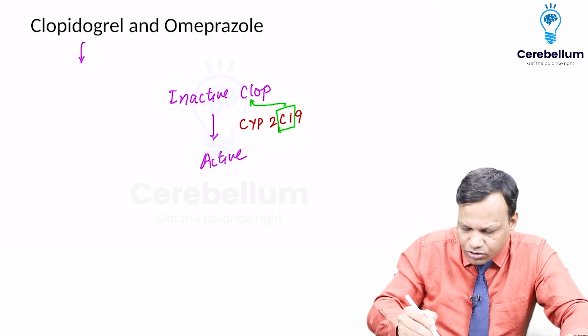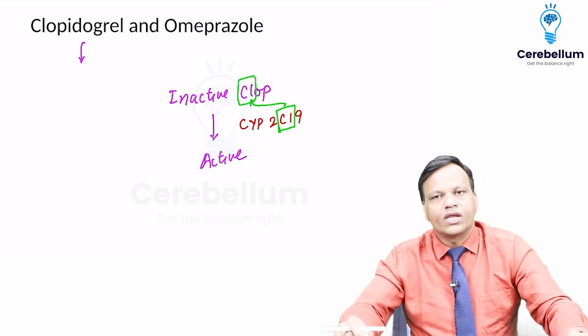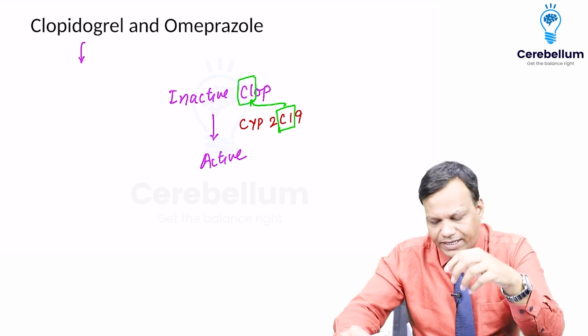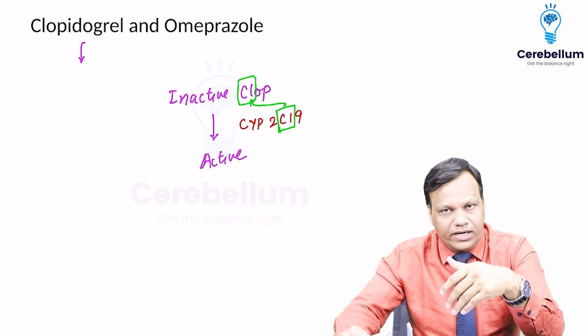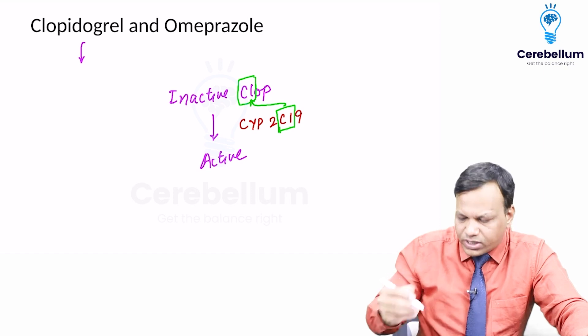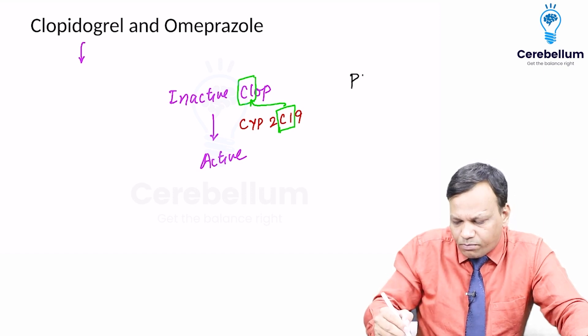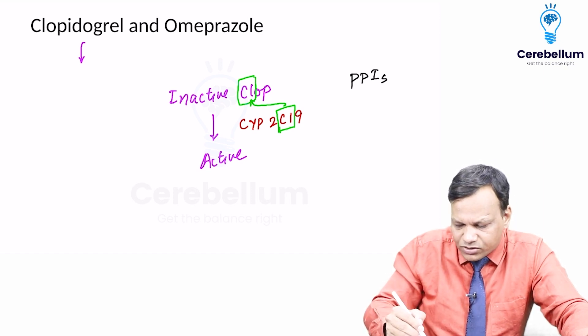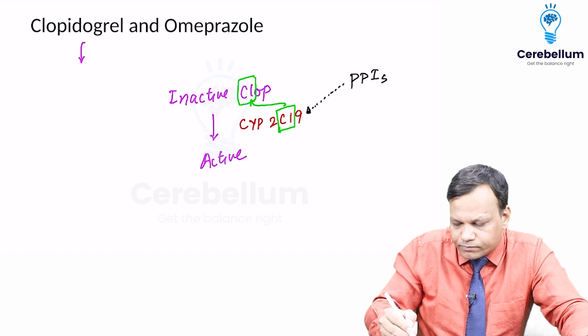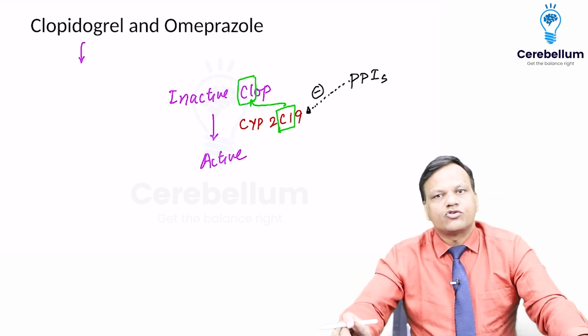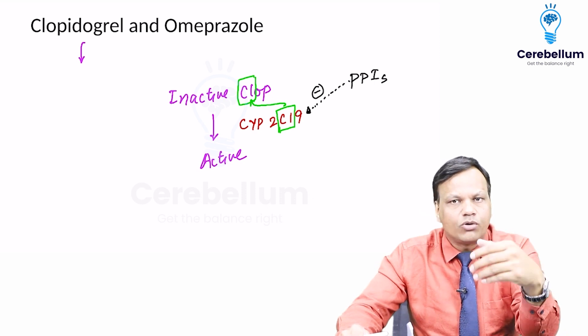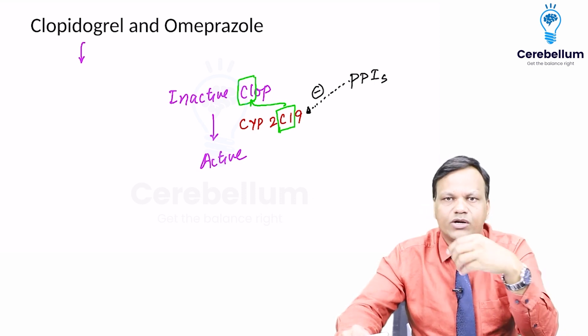So CYP2C19 activates clopidogrel, and omeprazole-like drugs, proton pump inhibitors like omeprazole, they inhibit this enzyme. So when this enzyme is inhibited, clopidogrel does not become active.